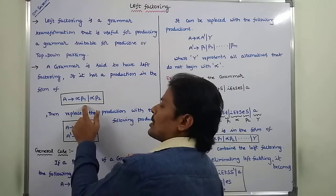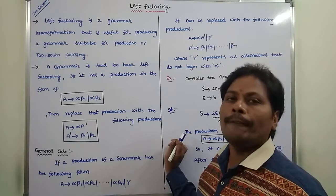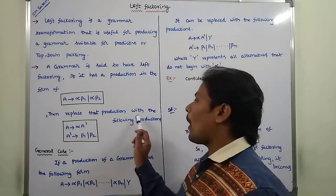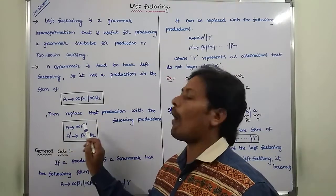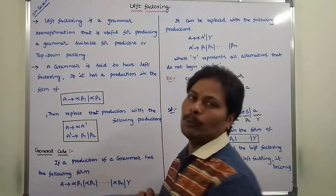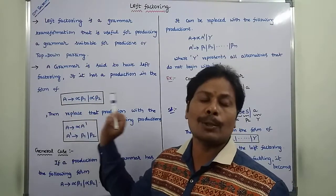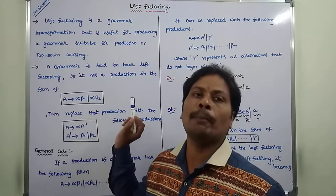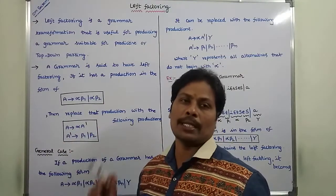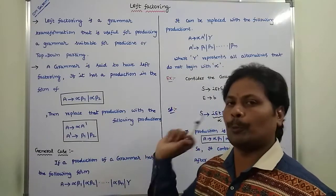If the given grammar has a production in the form A tends to alpha beta 1 or alpha beta 2, then this type of production can be replaced with the following productions: A tends to alpha A dash, and A dash tends to beta 1 or beta 2.